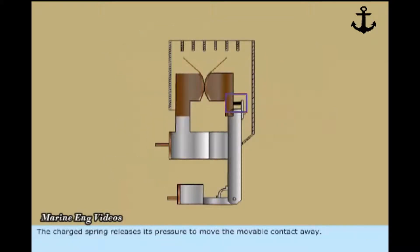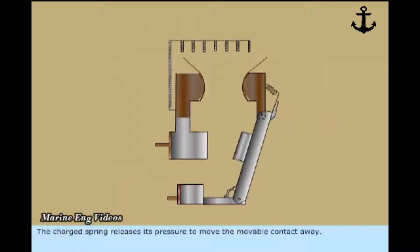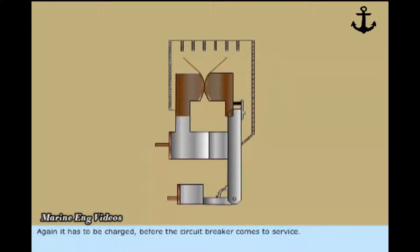The charged spring releases its pressure to move the movable contact away. Again, it has to be charged before the circuit breaker comes to service.